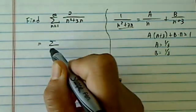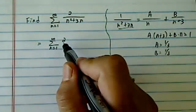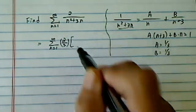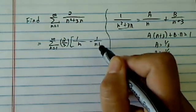And then here we have n equal to 1 to infinity, 2 over 3, and then you have 1 over n minus 1 over n plus 3.